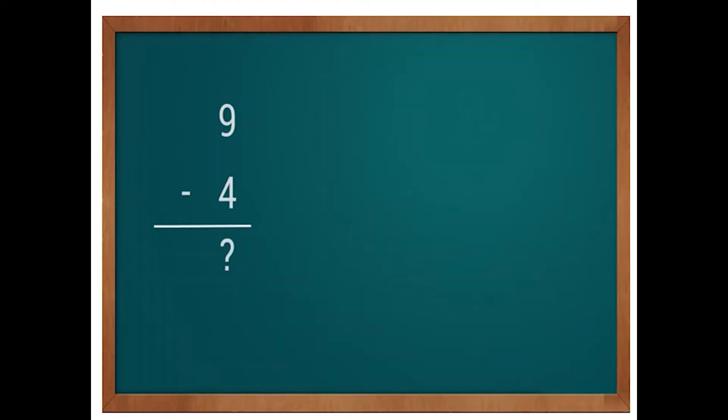Children, do you remember addition by using fingers and tallies? Same as addition, we can do subtraction by using fingers or by drawing lines. Let us see some examples. Our first question is nine minus four. To subtract four from nine, first we have to write the number nine, then write the minus sign, then write the second number four just below the number nine. Now let us learn how to do subtraction by drawing lines.